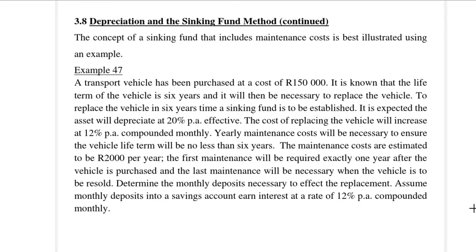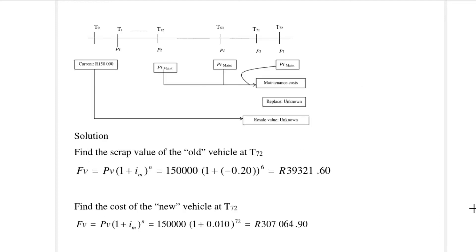We have a lot of information here and it's best illustrated in a timeline. So we have the current value of our vehicle, 150,000 rands. We make monthly deposits into our fund. We also need to pay for maintenance estimated at 2,000 rands per year, and then we have to find the accumulated maintenance costs, the replacement costs, and the resale value, the second-hand value of the vehicle.